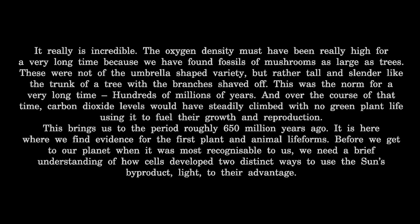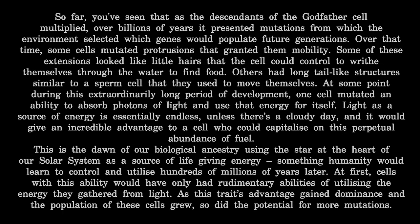It is here where we find evidence for the first plant and animal life forms. Before we get to our planet when it was most recognizable to us, we need a brief understanding of how cells developed two distinct ways to use the sun's byproduct — light — to their advantage. You've seen that as the descendants of the godfather cell multiplied over billions of years, it presented mutations from which the environment selected which genes would populate future generations. Over that time, some cells mutated protrusions that granted them mobility.